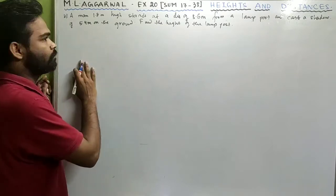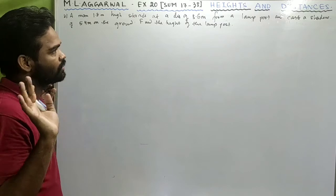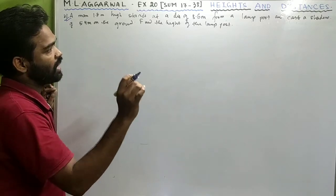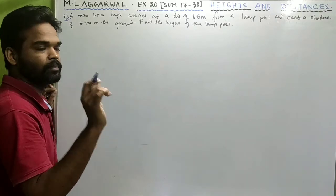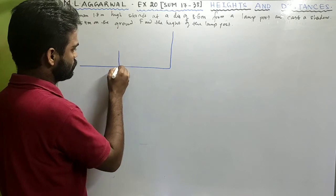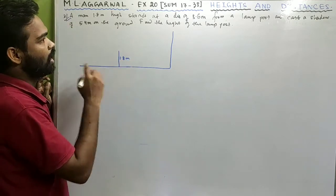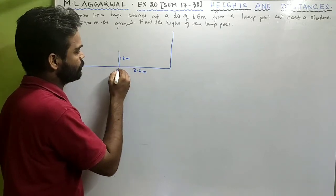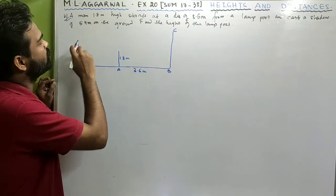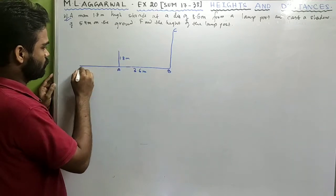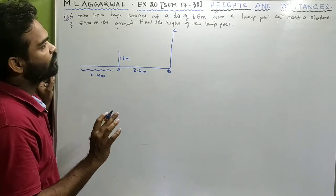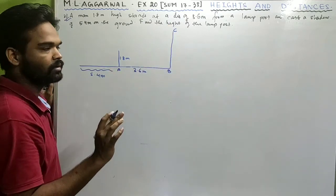Sum 31: A man 1.8 meters high stands at a distance of 3.6 meters from a lamp post and casts a shadow of 5.4 meters on the ground. Find the height of the lamp post. Construct EF parallel to AB, making rectangle EFBA where EF = 3.6 meters and FB = 1.8 meters. The shadow total length from the lamp base is 3.6 + 5.4 = 9 meters.